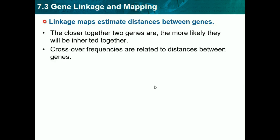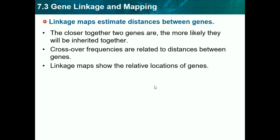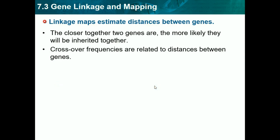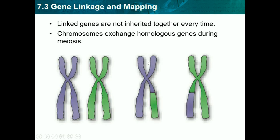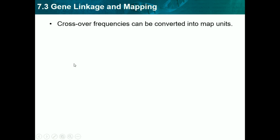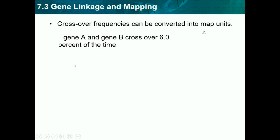Crossover frequencies are related to distance between genes, and linkage maps show the relative locations of genes — basically, crossing over is used to estimate how close or far apart genes are. For example, a gene located far up on a chromosome and one located far down are probably going to be inherited differently after crossing over, whereas two genes close together are more likely to be inherited together. Crossover frequencies can be converted into map units.